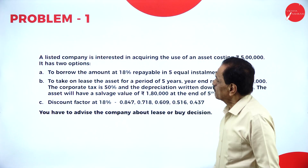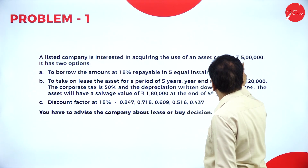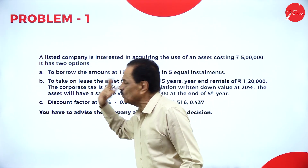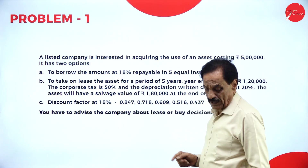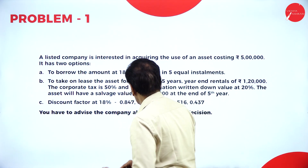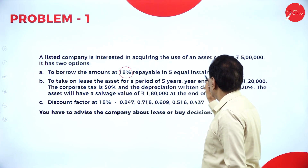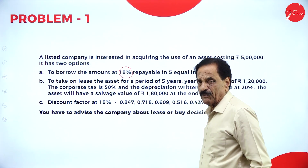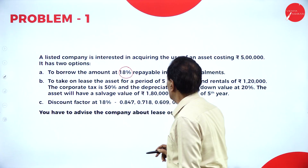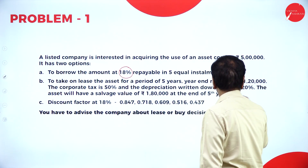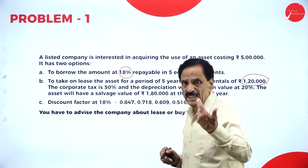We will move on to Problem Number One. A listed company is interested in acquiring the use of an asset costing rupees 5 lakh. It has two options. Option one: to borrow the amount at 18%, repayable in 5 equal installments. Option two: to take the asset on lease for a period of 5 years with a year-end rental value of rupees 1 lakh 20,000.